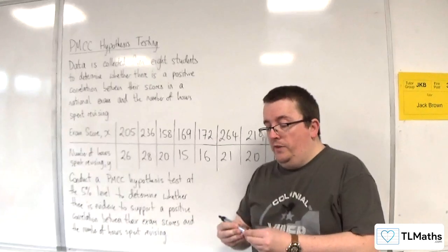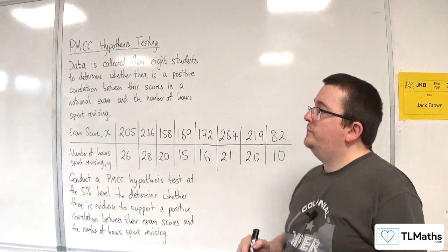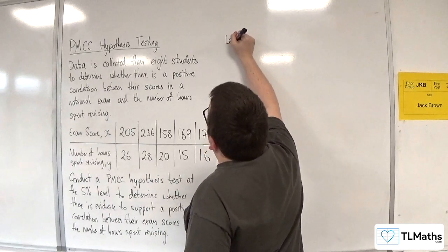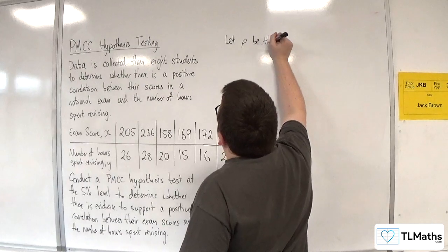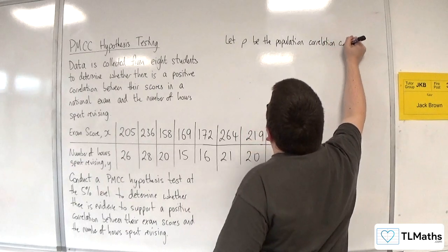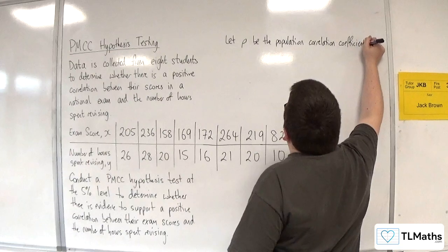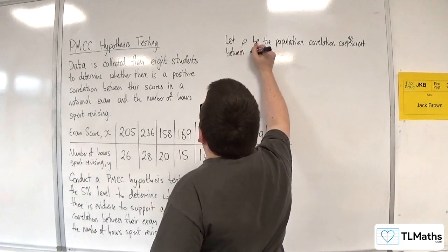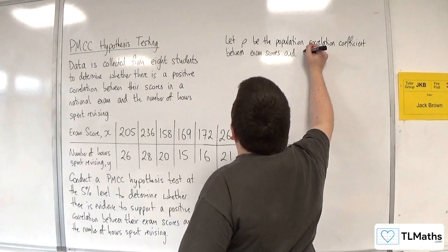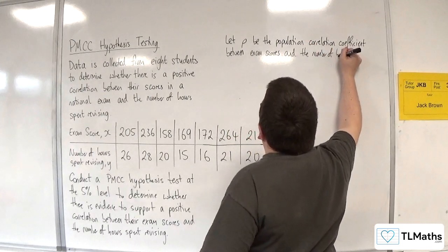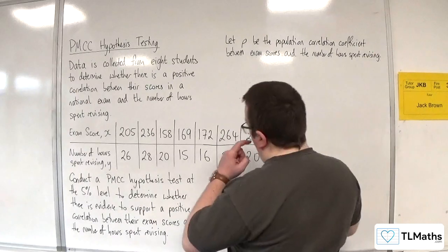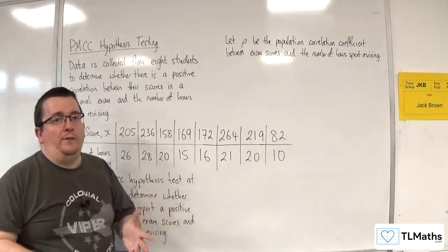So what we need to do to start off with is to define rho. Rho is the population correlation coefficient. We need to define that in context. So we start off by stating let rho be the population correlation coefficient between exam scores and the number of hours spent revising. Okay, so we need to define rho in context first. That's our opening statement.